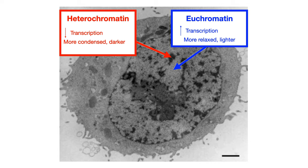In Refsum disease, there is an autosomal recessive mutation which impairs alpha oxidation specifically. Because it's specifically alpha oxidation that gets impaired, it's just the branched-chain fatty acids that can't be catabolized. We get increased levels of branched-chain fatty acids — specifically increased levels of phytanic acid — and we see decreased levels of phytanoyl-CoA hydroxylase or peroxin-7. Symptoms to look out for are sensorineural hearing loss, ataxia, cataracts, a short fourth toe — which is very high yield — and blindness.